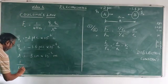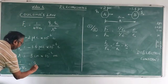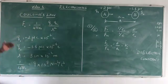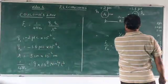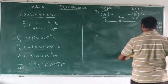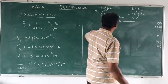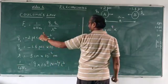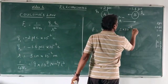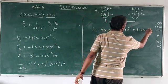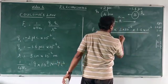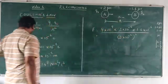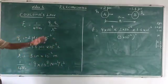And 1 upon 4 pi epsilon 0 is equal to 9 into 10 power 9 newton meter square upon coulomb square. Let us substitute the values in Coulomb's law. F is equal to 9 into 10 power 9 multiplied by the two charges, 2 into 10 power minus 6 multiplied by 1.6 into 10 power minus 6, whole divided by 3 into 10 power minus 2 the whole square. We are using inverse square law.